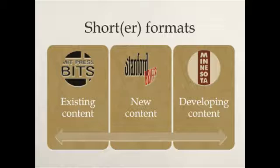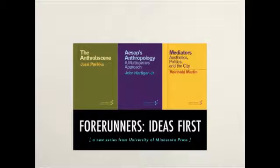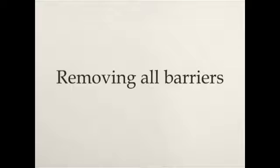Some new things that university presses are doing is to engage with shorter formats — addressing both time and format. MIT Press is using existing content and creating bite-sized pieces called 'bits.' Presses like Stanford and Rutgers are commissioning new content they're getting to market in about three months. And Minnesota is taking the most progressive stance by publishing developing content they hope to later turn into a book — sort of along the model of SSRN, called Forerunners.